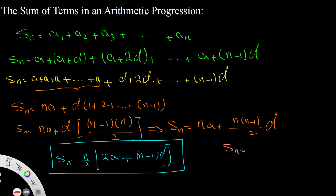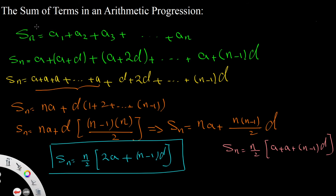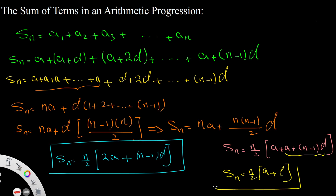We can obtain another form of the formula: Sn = n/2 × (2a + (n-1)d) = n/2 × (a + (a + (n-1)d)). Since a + (n-1)d is the last term, denoted l, we get Sn = n/2 × (a + l). This formula is useful when you know both the first and last term.